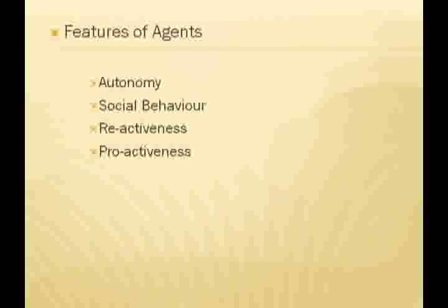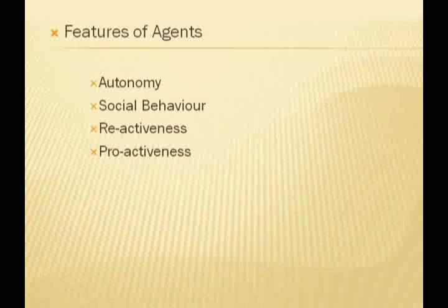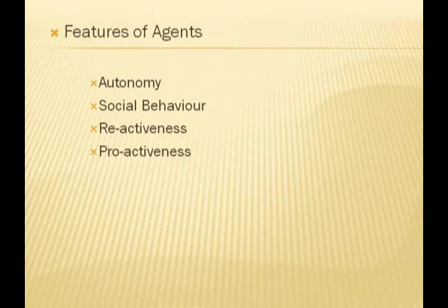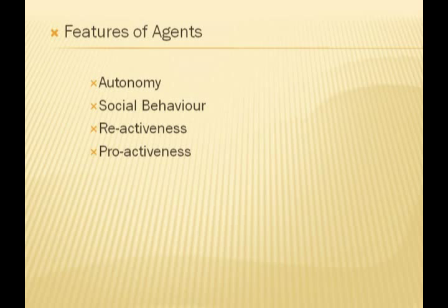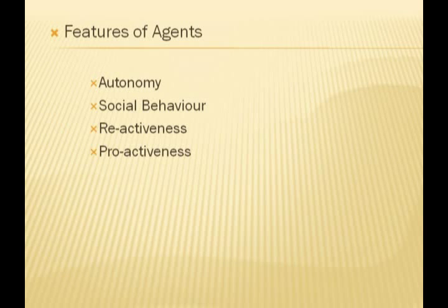There are four main features associated with agents. The first one is autonomy — that is, the agent is entirely able to control its activities and internal state. The next one is social behavior, which means agents should be able to interact with each other as well as human beings. And reactiveness refers to an agent being able to respond to external influences.